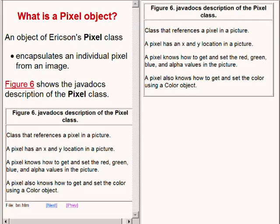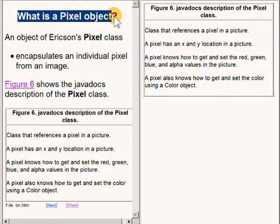In this lecture we won't get into transparency but we will be concerned with the red green and blue values associated with each colored dot or each pixel. Now back to the original question. What is a pixel object?